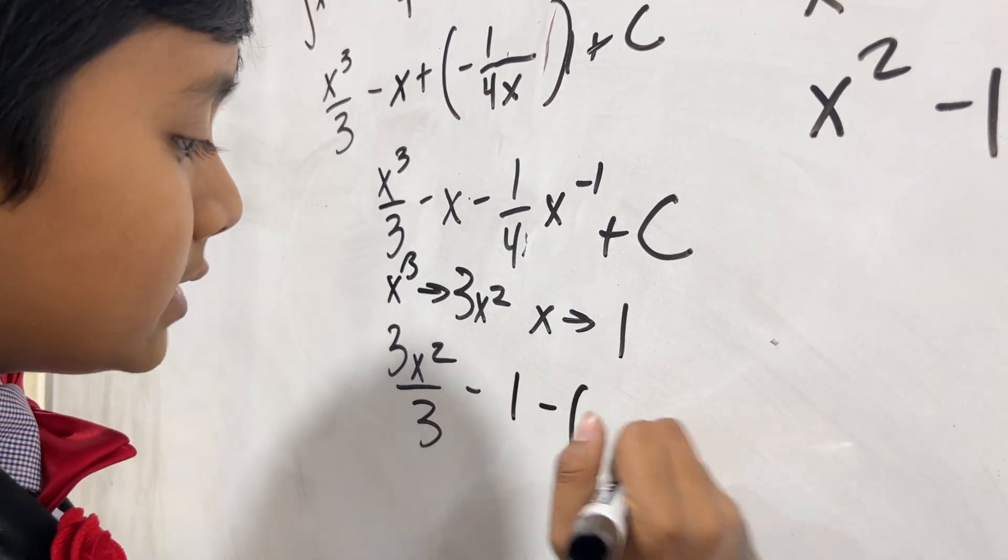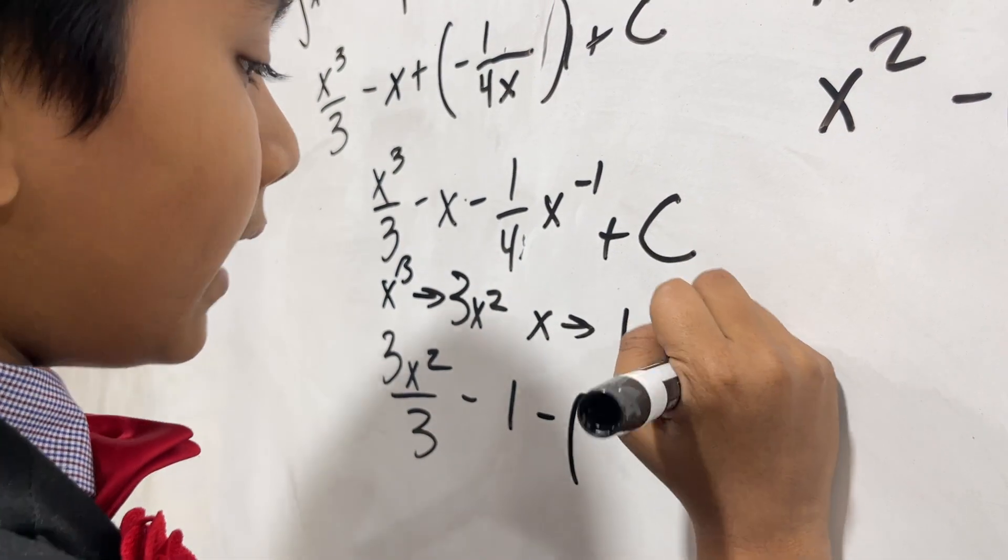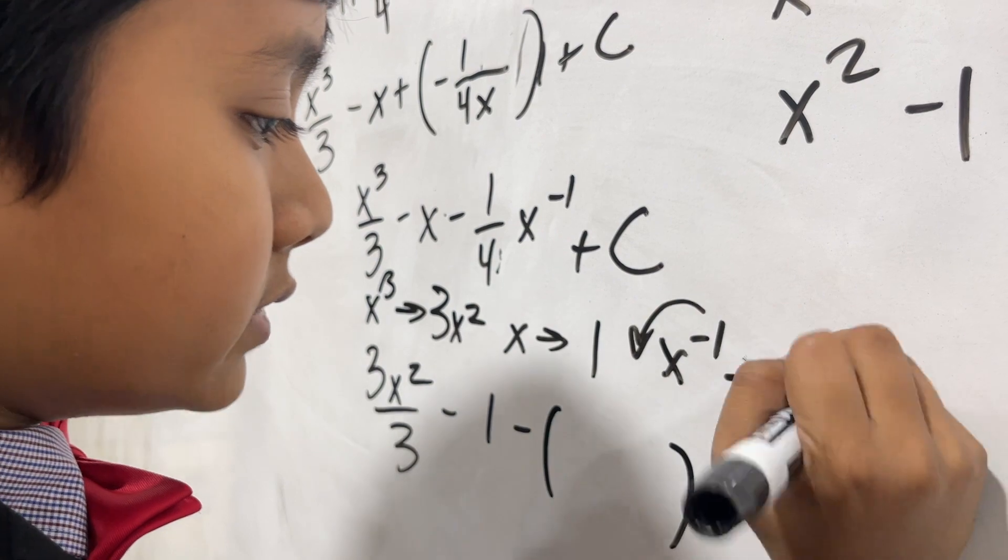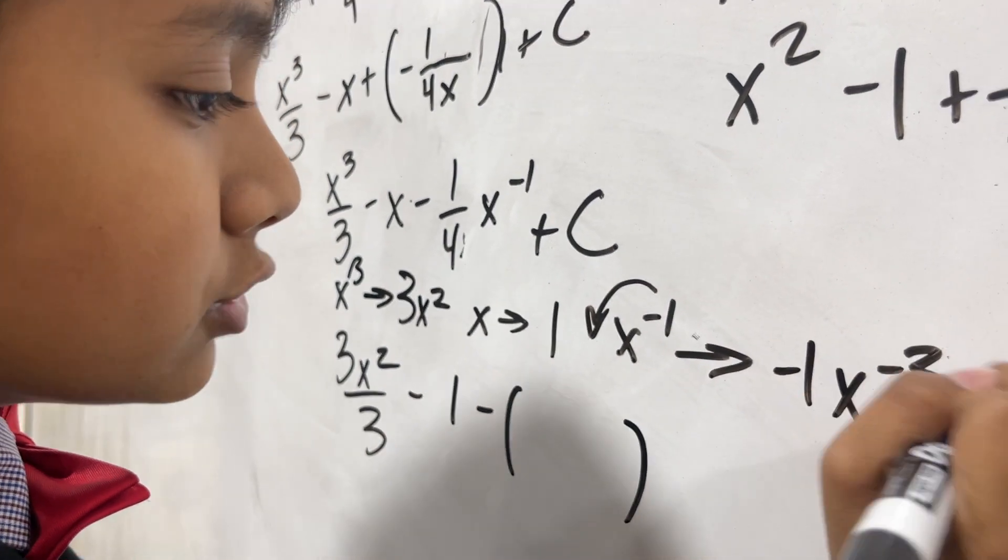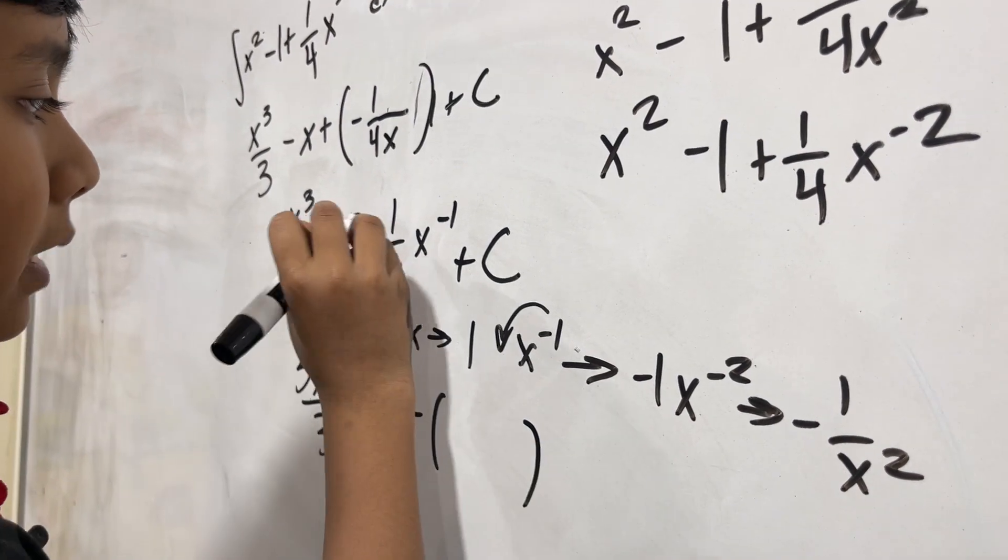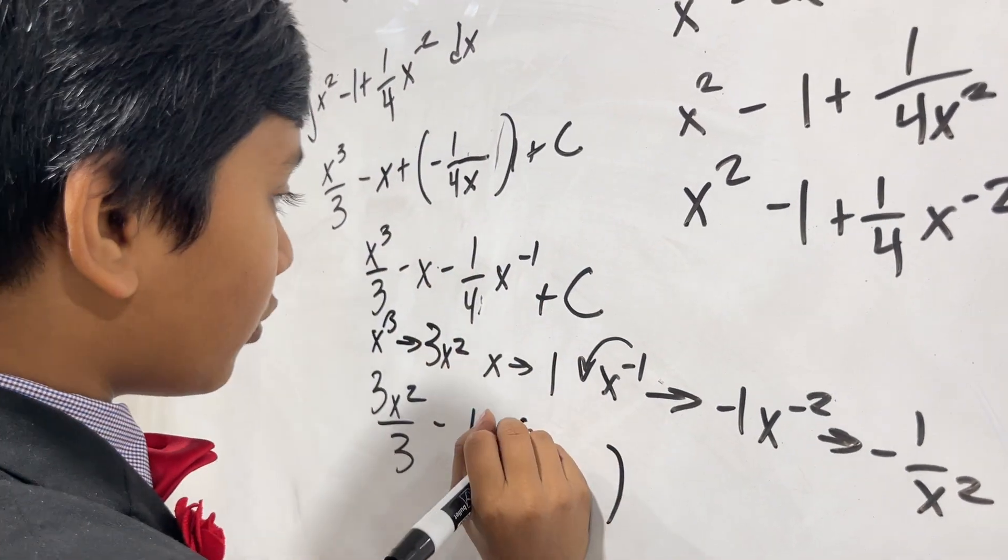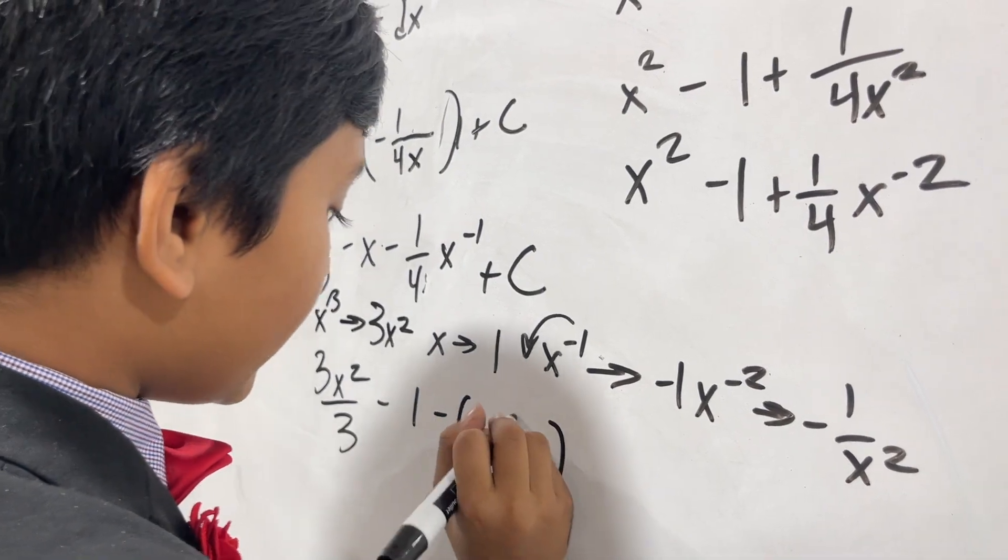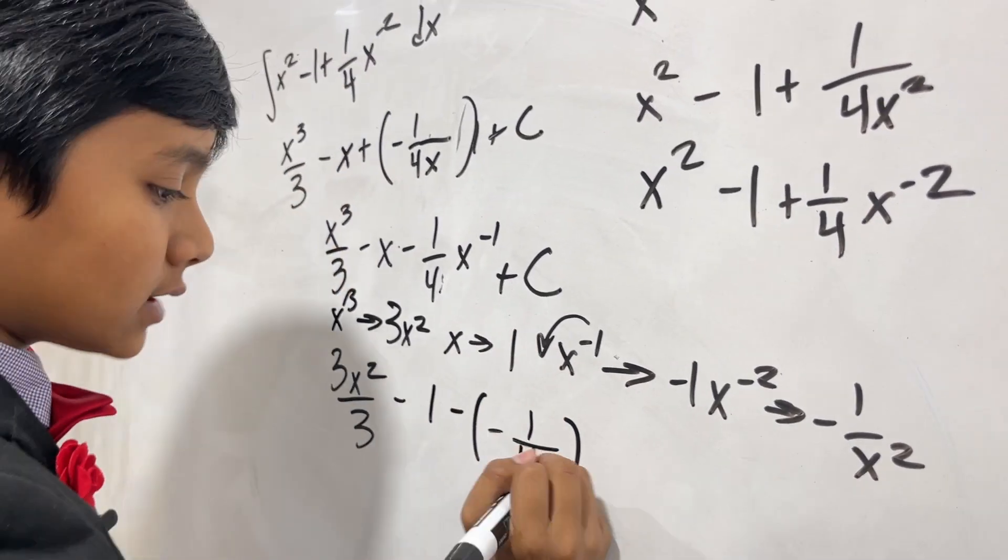What is x to the minus 1? Well, that becomes, by the power rule again, this comes down, minus 1x to the minus 2, minus 1 over x squared. Combine that with the minus 1 over 4 that we had over here, and we get negative 1 over 4x squared.